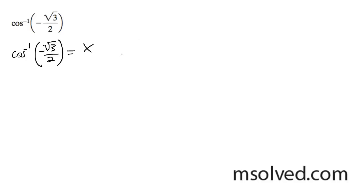And my bounds here for x are going to be between 0 and pi, because it's inverse cosine. And next here, I can rewrite this: cosine of x is equal to negative root 3 over 2.